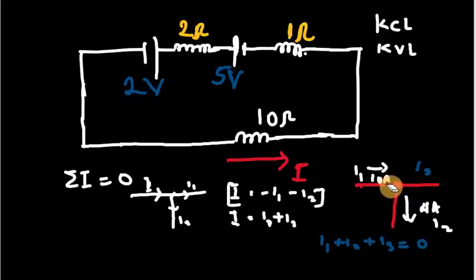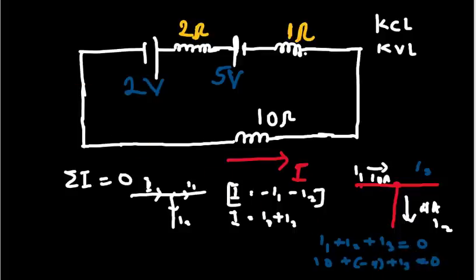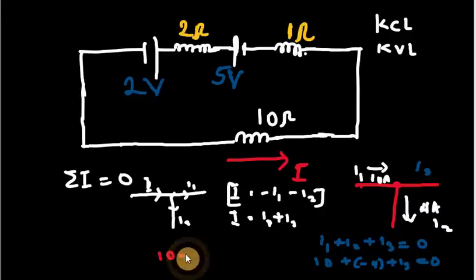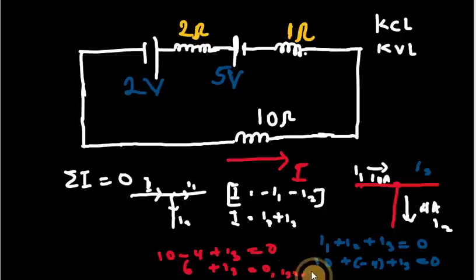I1 is entering the junction so it is positive: plus 10. I2 is leaving the junction so it is negative: minus 4. Plus I3 equals zero. So 10 minus 4 plus I3 equals zero, giving 6 plus I3 equals zero. Therefore I3 equals minus 6 ampere.